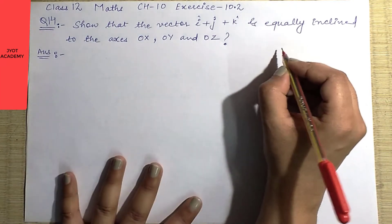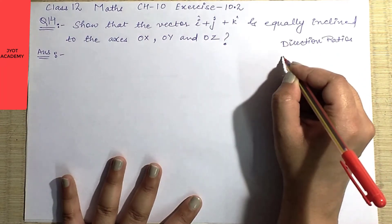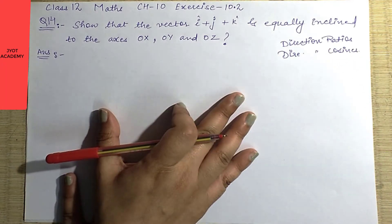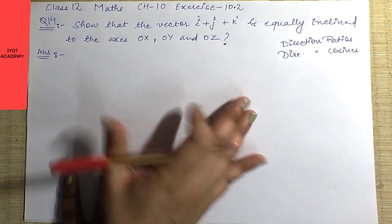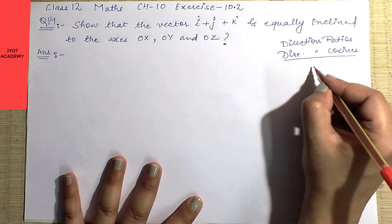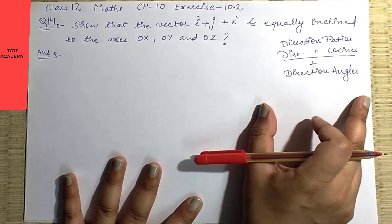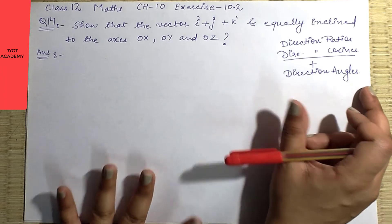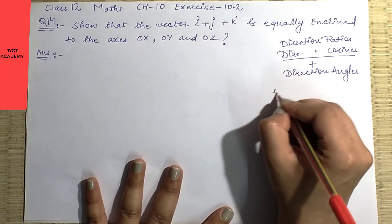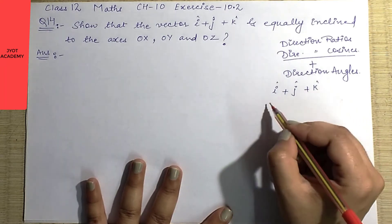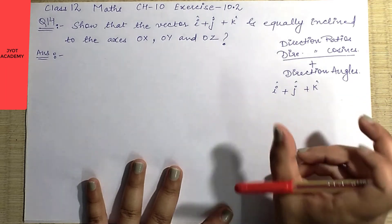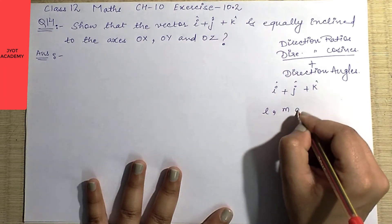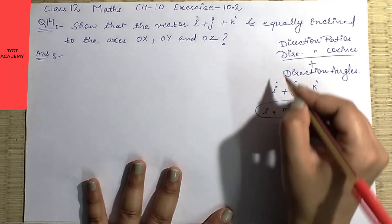Before starting this question, you already know what direction ratios are, and you also know how to find direction cosines. Here we will use direction ratios and direction cosines, and along with that we will add the topic of direction angles. Direction cosines are accompanied by direction angles.